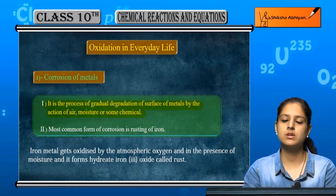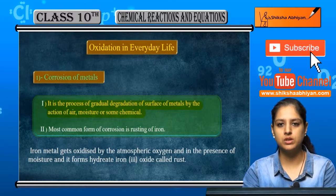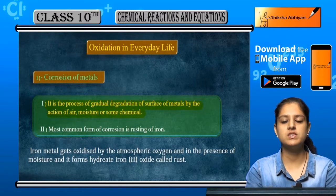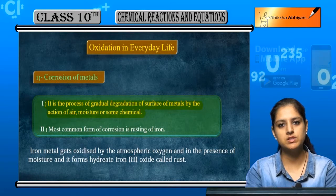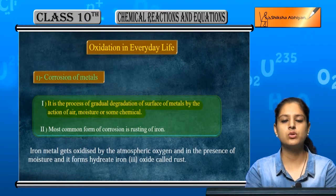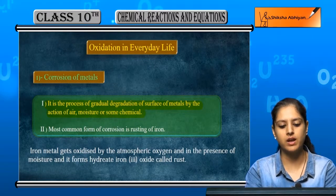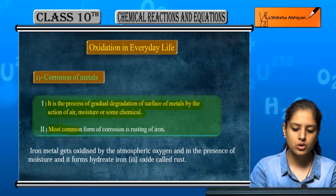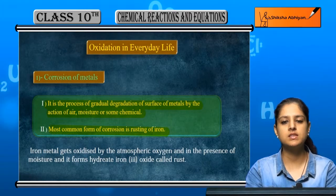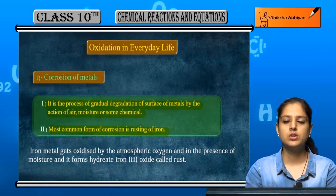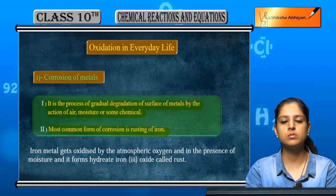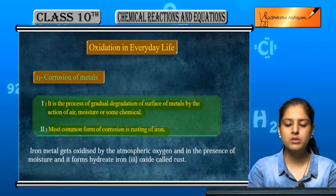Jo bhi metal hai jiska surface kharaab ho gaya hai, it has been corroded. Wo jo corrosion hai, wo air ki wajah se bhi ho sakta hai, moisture ki wajah se bhi, ya kisi chemical ki wajah se bhi. For example, an iron nail becomes brown — that is corrosion of an iron nail, ya phir rusting of iron. The most common form of corrosion is rusting of iron. Aise hi copper, zinc ye sab dheere dheere corrode jate hain. Silver ke upar black layer aati hai — its blackening is also because of corrosion.